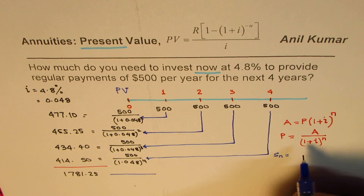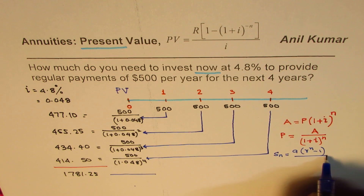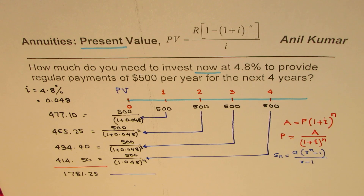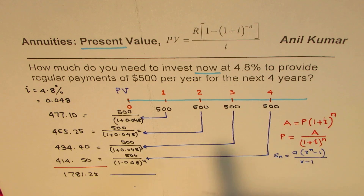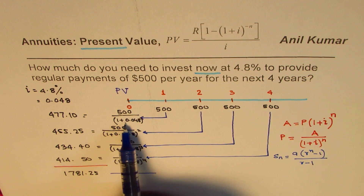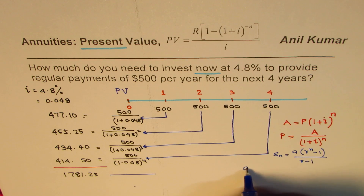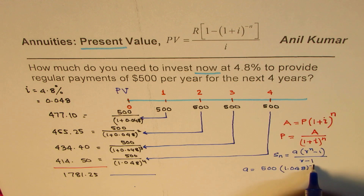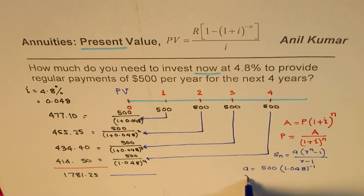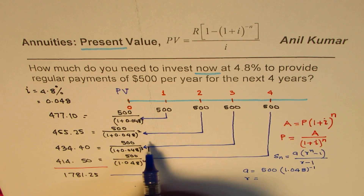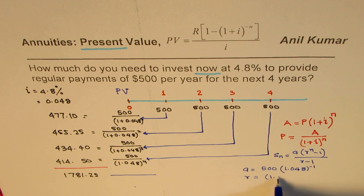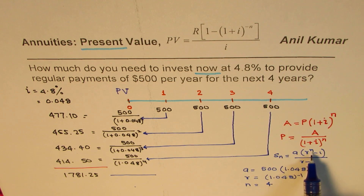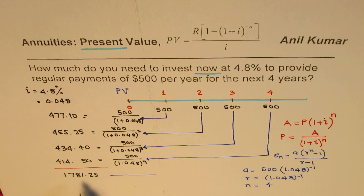The geometric series sum of n terms is S = a × (r^n − 1) / (r − 1). In this case, a equals 500 × (1.048)^(−1), and r equals (1.048)^(−1) since we are always multiplying by 1 over (1.048), and n equals 4. You can find a, r, and n, substitute these values, and calculate — you will get the same result.